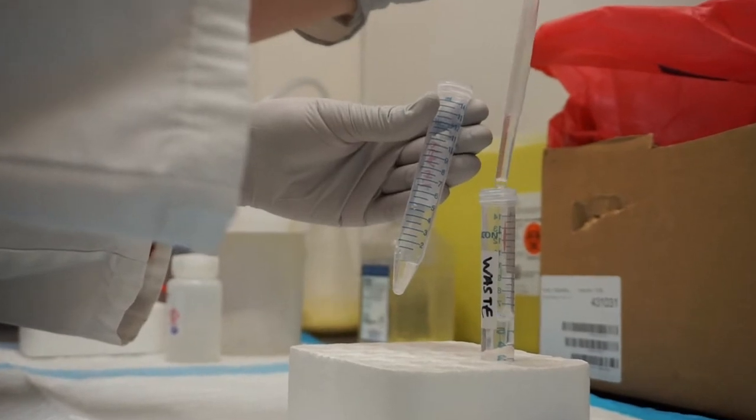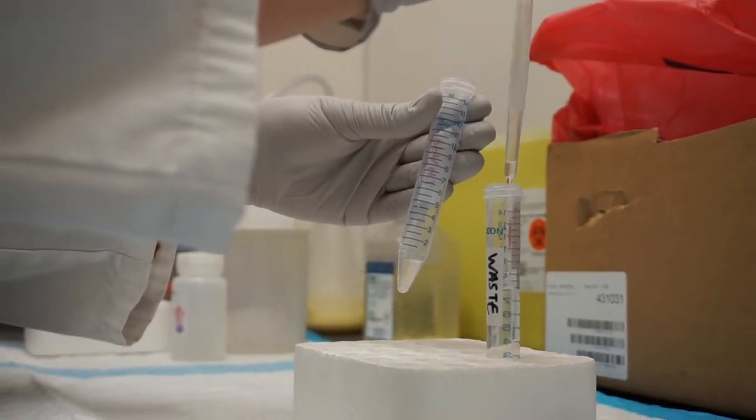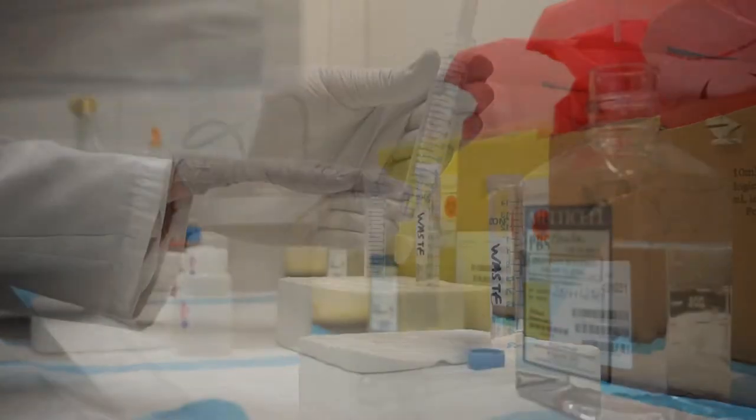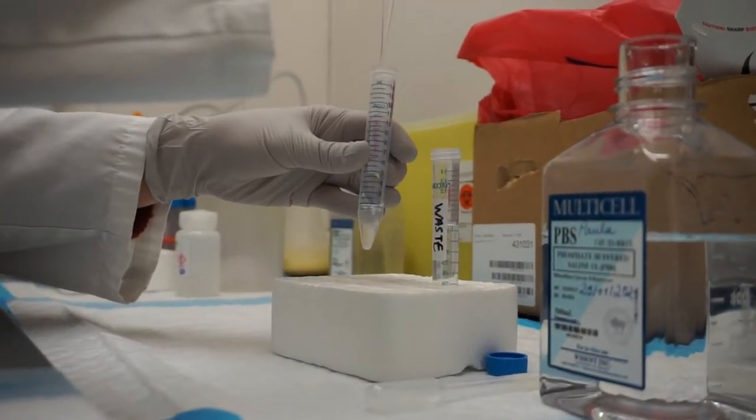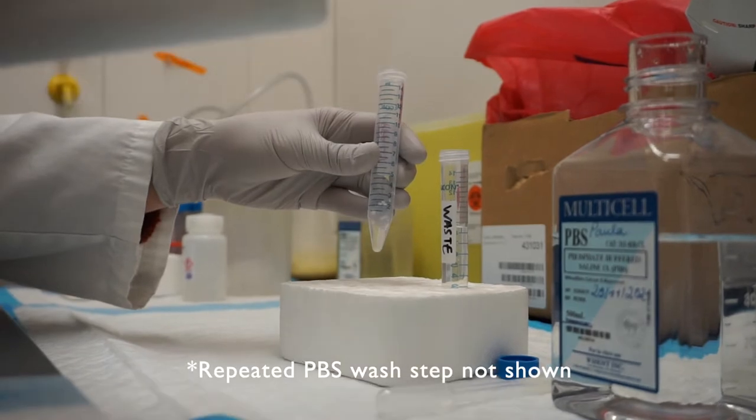Once the samples are fixed, remove the paraformaldehyde solution. Then wash the organoids with PBS for 15 minutes. Repeat the wash step twice.